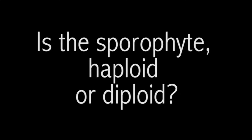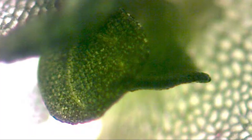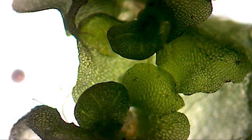Is the sporophyte haploid or diploid? The single-celled zygote divides by mitosis and develops into a multicellular sporophyte. The sporophyte then becomes diploid. Diploid means that the cells contain two full sets of chromosomes. We know that sporophytes are diploid because they were formed from the sexual reproduction of the gametophytes.